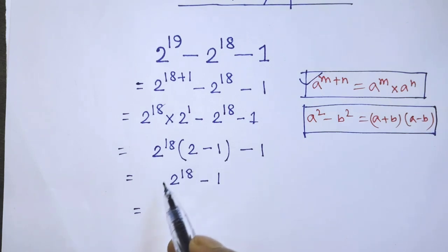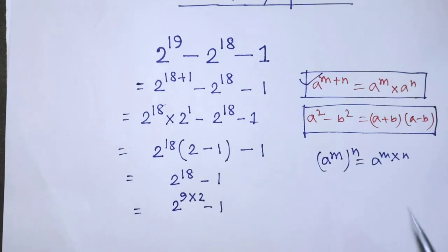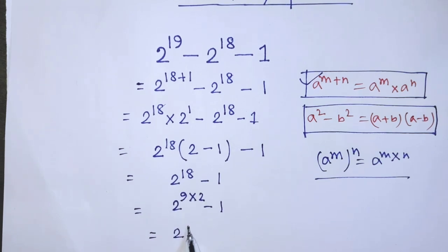We can write in this exponential form, 2 to the power 9 times 2 minus 1. According to this formula, it will be 2 to the power 9 whole to the power 2 minus 1.